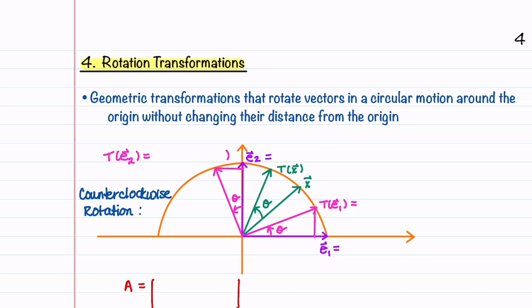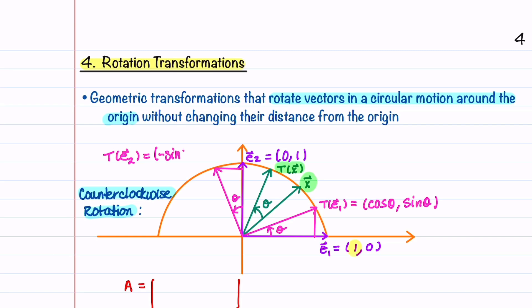Let's now look at rotation transformations — my favorite, because they have trigonometric functions in them. These are geometric transformations that rotate vectors in a circular motion around the origin without changing their distance from the origin. We'll first look at counterclockwise rotation. E1 is (1, 0) and it rotates to become T of E1, which is (cos θ, sin θ), because the radius of our circle equals 1. E2 is (0, 1) and it rotates counterclockwise to become T of E2, which is (-sin θ, cos θ).